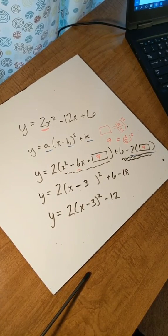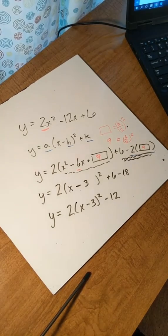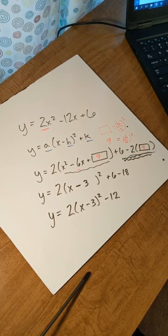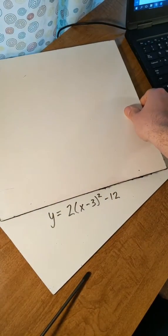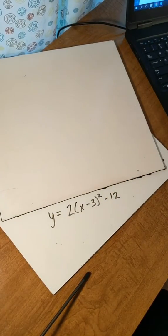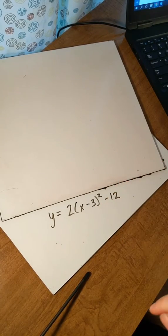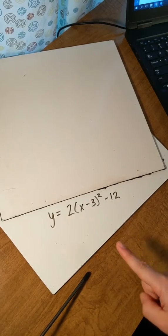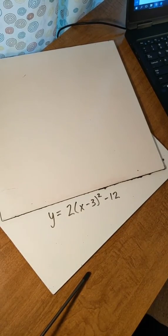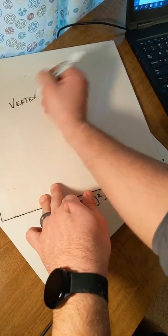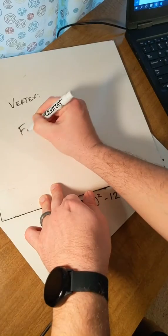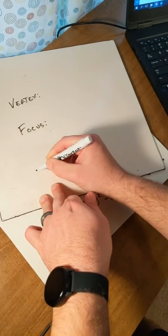So I'm going to pause there and we're going to break down everything about this. I'm going to leave that formula over here, but I've got this other whiteboard. So these problems always have two parts to them: the first part is to get it into standard form, and the other part is to find the important information — the vertex, the focus, and the directrix.